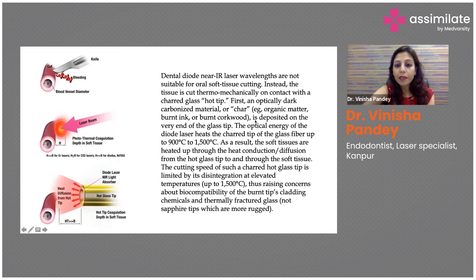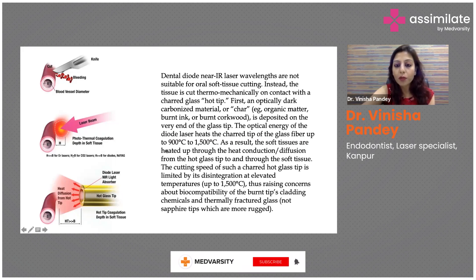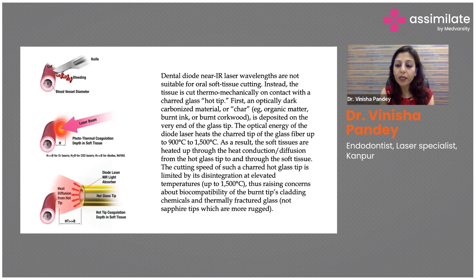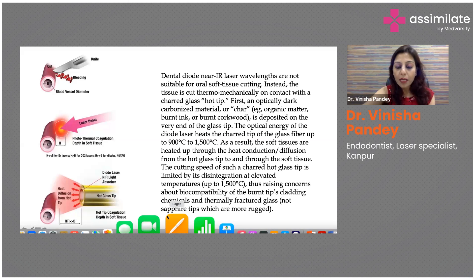An optical dark carbonized material, such as burnt ink or burnt corkwood, is deposited on the very end of the glass tip. The optical energy of the diode laser heats the charred glass fiber tip to between 900 and 1500 degrees Celsius. As a result, soft tissues are heated through heat conduction and diffusion from the hot glass tip into and through the soft tissue. The cutting speed of the charred hot tip is limited by its disintegration at elevated temperatures.